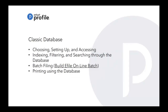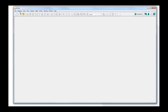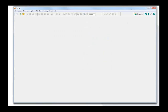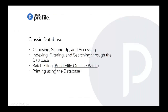So we chose Classic Database, set it up, accessed it through the Database menu, did some indexing, and showed filtering using the statuses. For searching in Classic Database, go under Database Open and you can search by name or by social insurance number if you have it for your client. That would be under the search option. Batch filing and printing using the database were also covered for Classic Database.